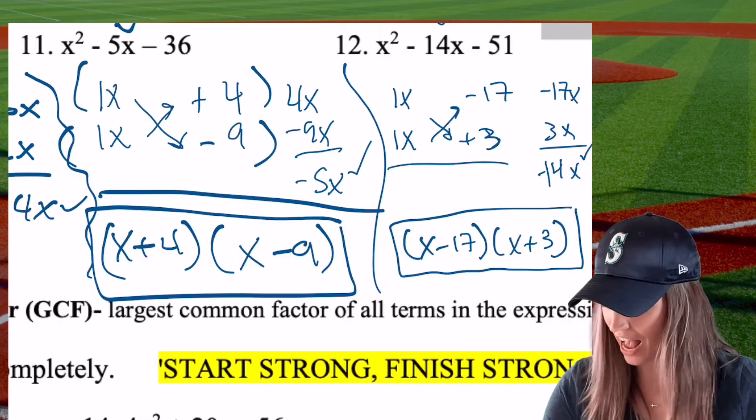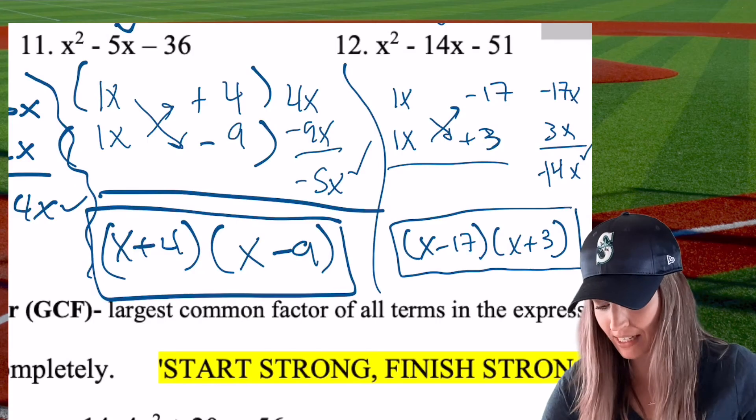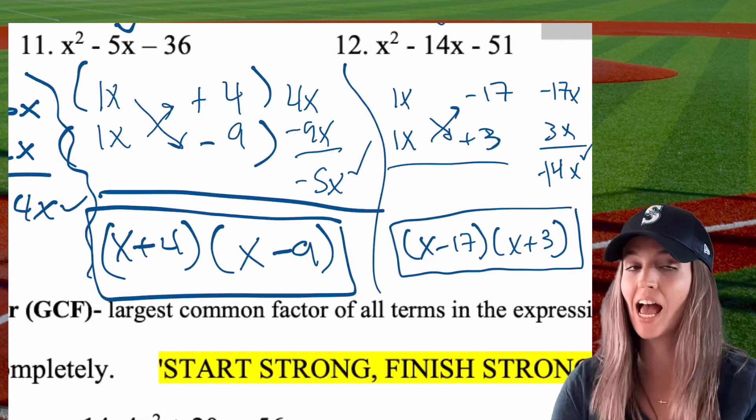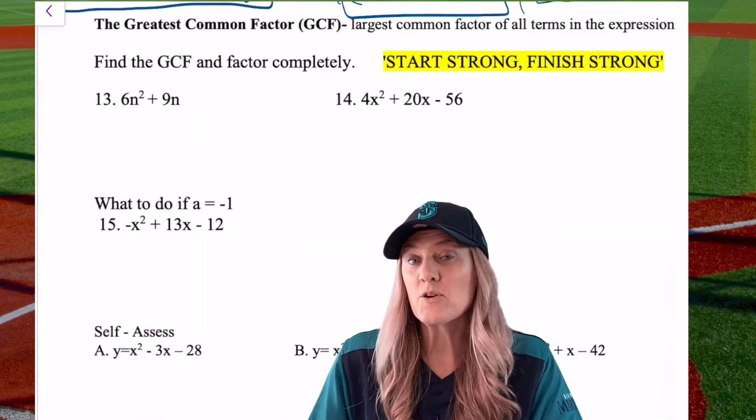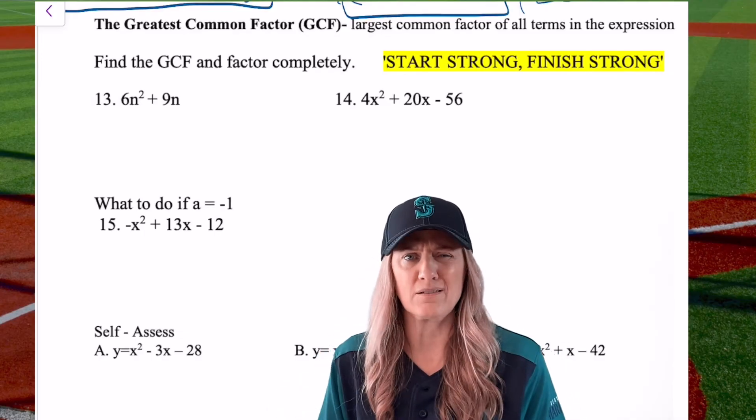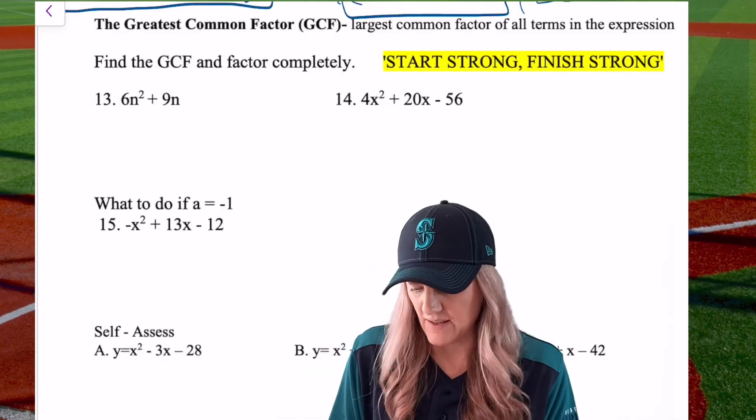Sweet. Why don't you go try the next two with this? Let's check and see how you did. I got X plus 4 X minus 9 for number 11 and then 12 I got X minus 17 X plus 3. Let's review greatest common factor. So that's the largest common factor of all terms in the expression.